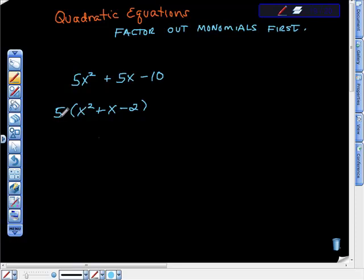5 times, I'm sorry, 5 times x squared is 5x squared, 5 times positive x is positive 5x, and 5 times negative 2 is negative 10, isn't it? So I have all the pieces.